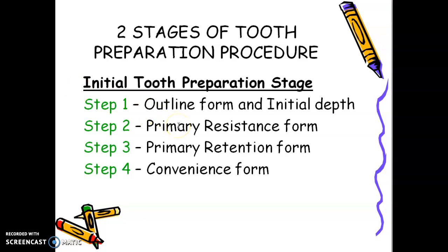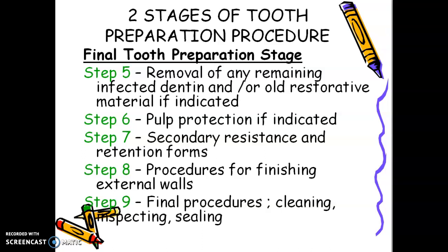For the initial tooth preparation stage, step 1 is outline form and initial depth; step 2, primary resistance form; step 3, primary retention form; step 4, convenience form; step 5, removal of any remaining infected dentin or old restorative material if indicated; step 6, pulp protection if indicated; step 7, secondary resistance and retention forms; step 8, procedures for finishing external walls; step 9, final procedures — cleaning, inspecting, and sealing.